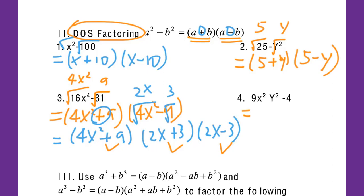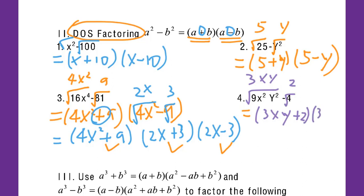Number four: I have 9x squared y squared minus 4. Same thing — I take the square root of both. I get 3xy and 2. So the answer is (3xy plus 2) times (3xy minus 2). When I check, I cannot keep factoring, so that's all. We call this DOS factoring, which means two terms with subtraction — Difference of Squares. Take the square root of both, then add, then subtract, then multiply.